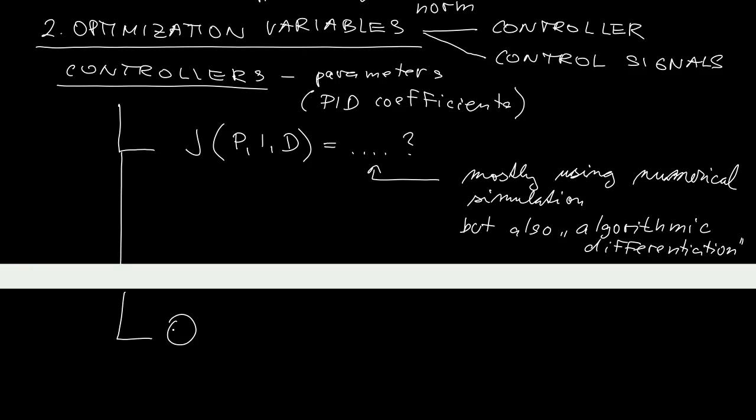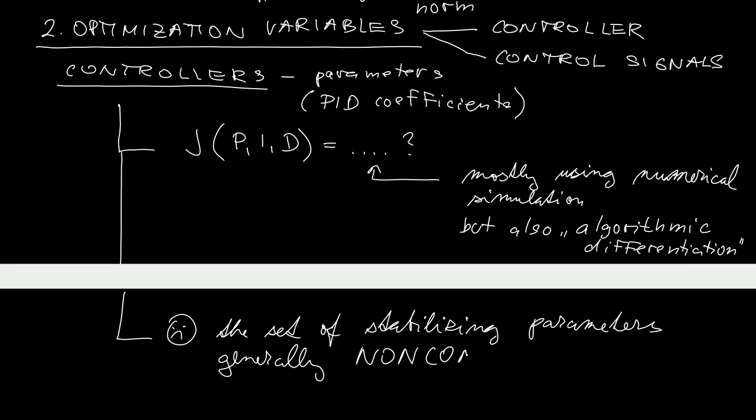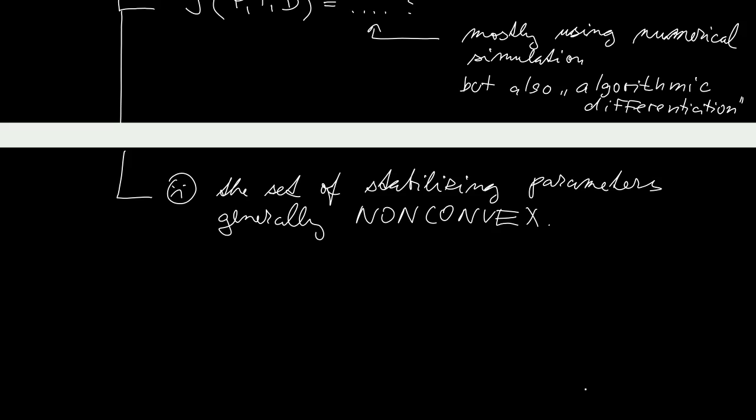The other issue is more serious. If you only want to minimize characteristics, this is not enough—you'll also have to impose closed-loop stability constraints. The trouble is that the set of stabilizing parameters of the controllers is typically non-convex, which renders the optimization difficult.